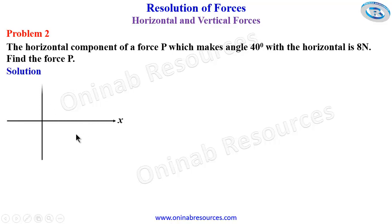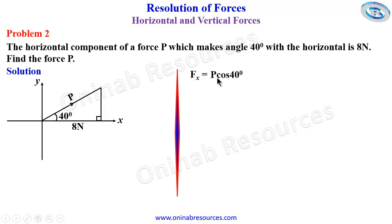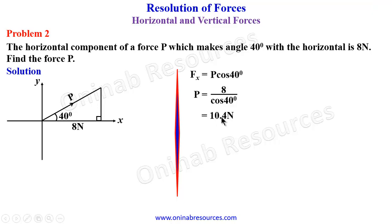In our solution, we represent the information in a diagram. We have the force P making an angle of 40 degrees with the horizontal, and the horizontal component is 8 newtons. We know that Fx equals P cos 40 degrees, using adjacent and hypotenuse with trigonometric ratios. So P equals Fx over cos 40 degrees, which is 8 divided by cos 40 degrees. Pressing this in our calculator, we get 10.4 newtons, which is the force P. That is all for problem 2.